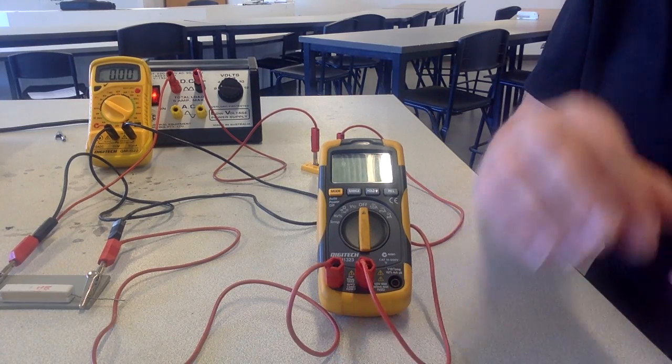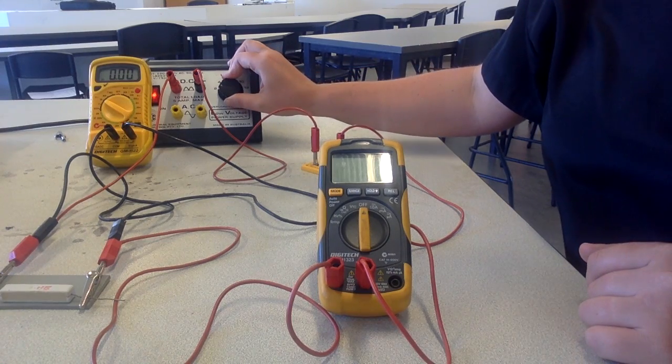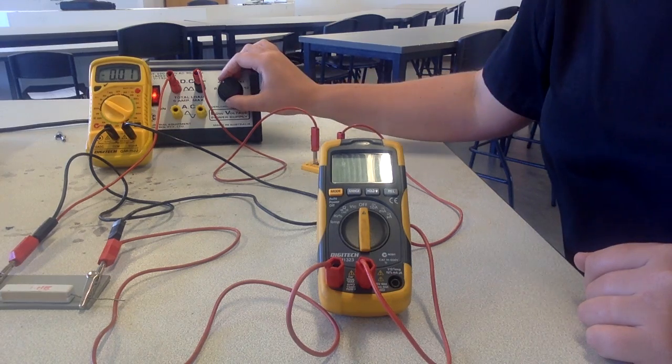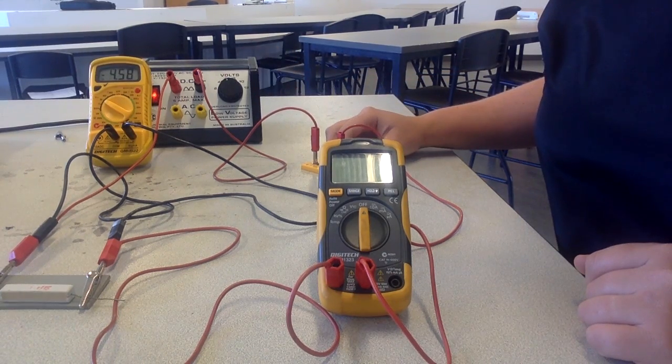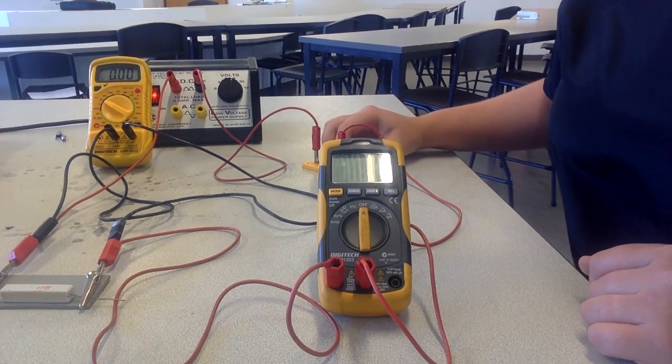What you should do then, if you've got an ammeter that works, take the reading and then increase the voltage here, take the readings, increase the voltage, take the new readings. Keep increasing the voltage all the way up to 12 volts.